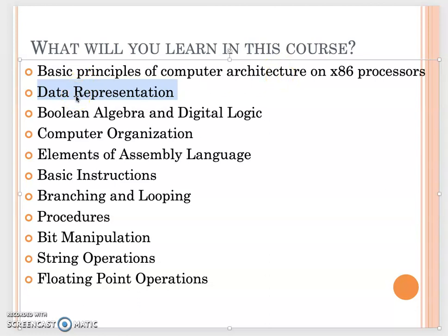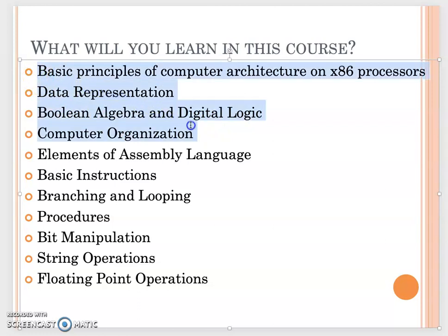After understanding the hardware processor and CPU structure, we address how data is represented in the computer. Since computers only understand ones and zeros, we will learn how program data is represented in binary. We will also cover boolean algebra — if-else conditions, true and false — and digital logic, which is what the hardware really deals with. The first three chapters focus on hardware, boolean algebra, data representation, and computer organization.